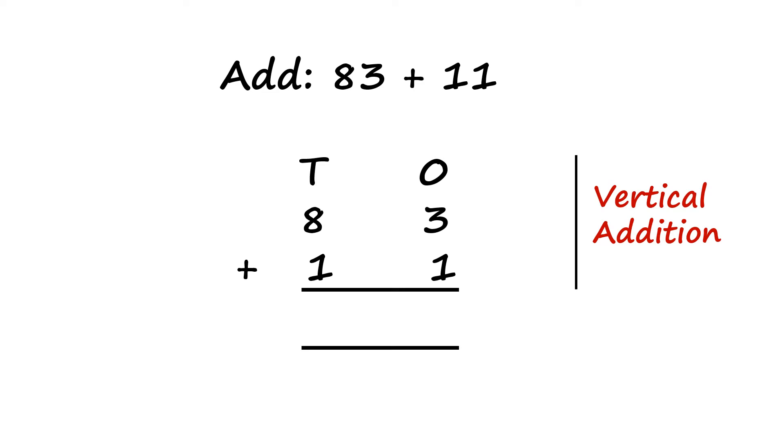Add 83 plus 11. Now this is vertical addition. 3 will come in the 1's place. 8 will go into the 10's place. 1 will come in the 1's place. 1 will go into the 10's place. Now never forget to put the addition sign when you add. And we should always begin from the 1's place for addition.